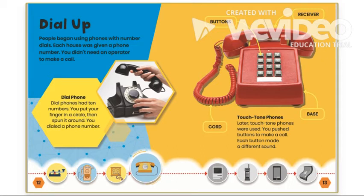Later, touchtone phones were used. You pushed buttons to make a call. Each button made a different sound. Many of you might not have seen the dial phone, but I'm sure many of you have seen a touchtone phone. Let's look at the different parts: there are the buttons with the different numbers, the receiver which is the part you pick up and speak into, the cord which connects the receiver to the base.